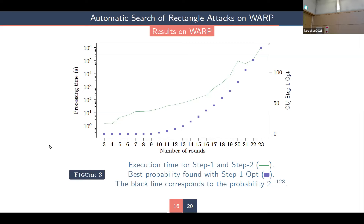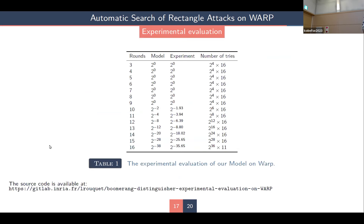For 23 rounds, the distinguisher is not usable in practice since the attack has complexity higher than exhaustive key search. We also tested the accuracy of our model by experimentally evaluating the distinguisher probability. The model column shows probabilities computed by our model and the experimental column shows experimental evaluations — the results are very close, but the gap between model approximation and experimental evaluation increases as more rounds are added.